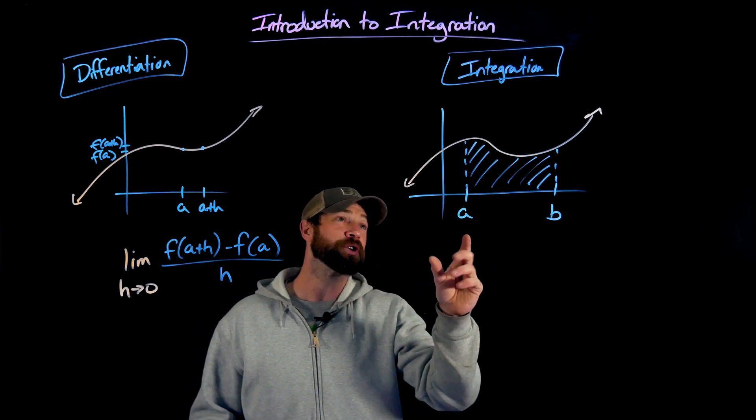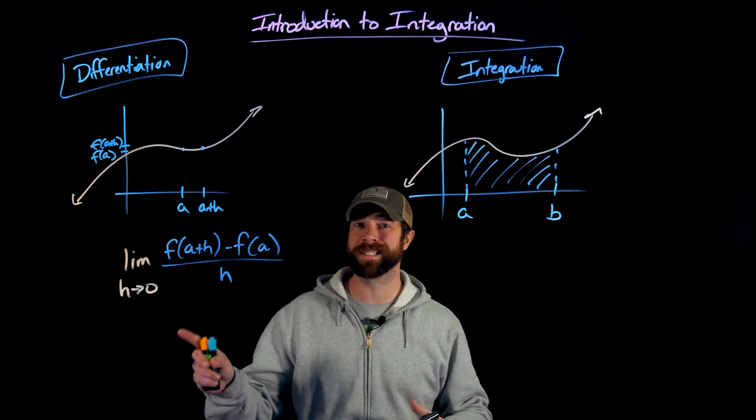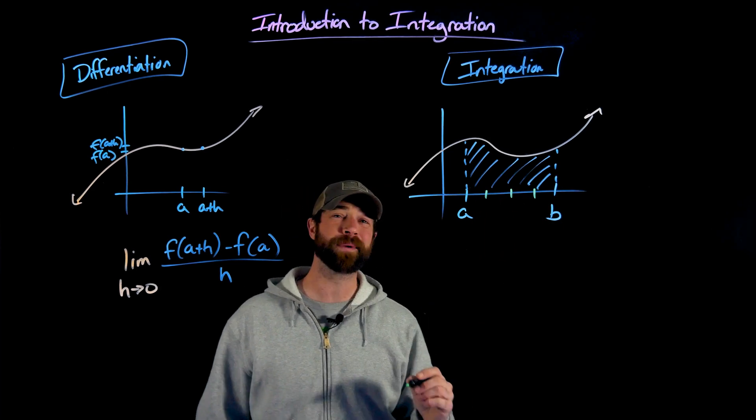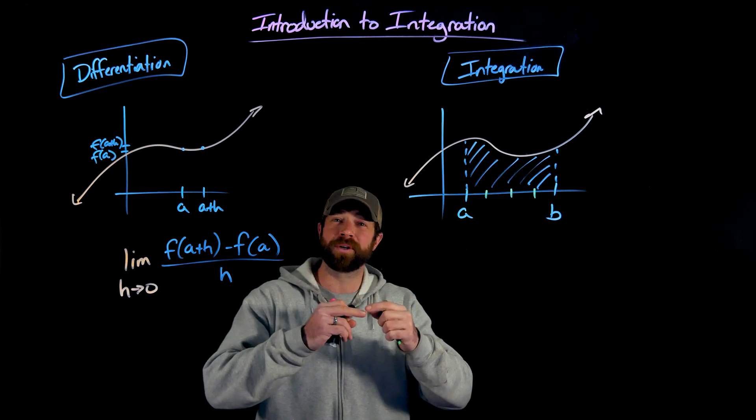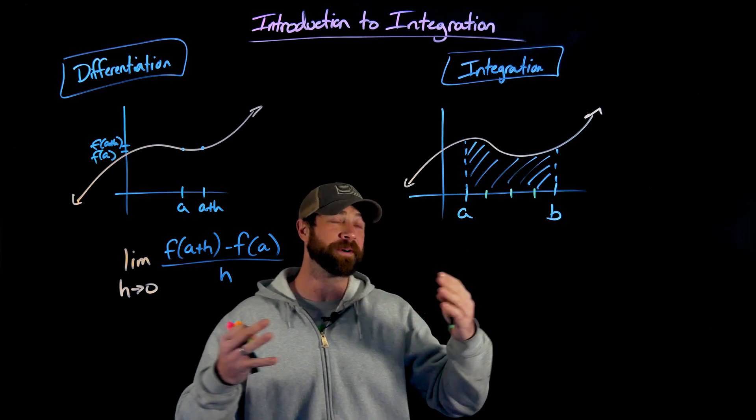So what we're going to do is find the area. We're going to use a method similar generally to this method, but what we're going to do is we're going to use this idea of Riemann sums of finding little rectangles to approximate the area and then start using more and more rectangles.